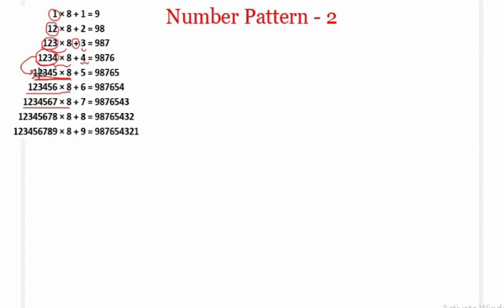It's a juxtaposition — a side-by-side addition of one more integer each time. Initially it's 1, then 12, then 123, then 1234, up to 123456789. The multiplied number is always fixed at 8, and the number being added goes 1, 2, 3, 4, 5, 6, 7, 8, and the last number added is 9.